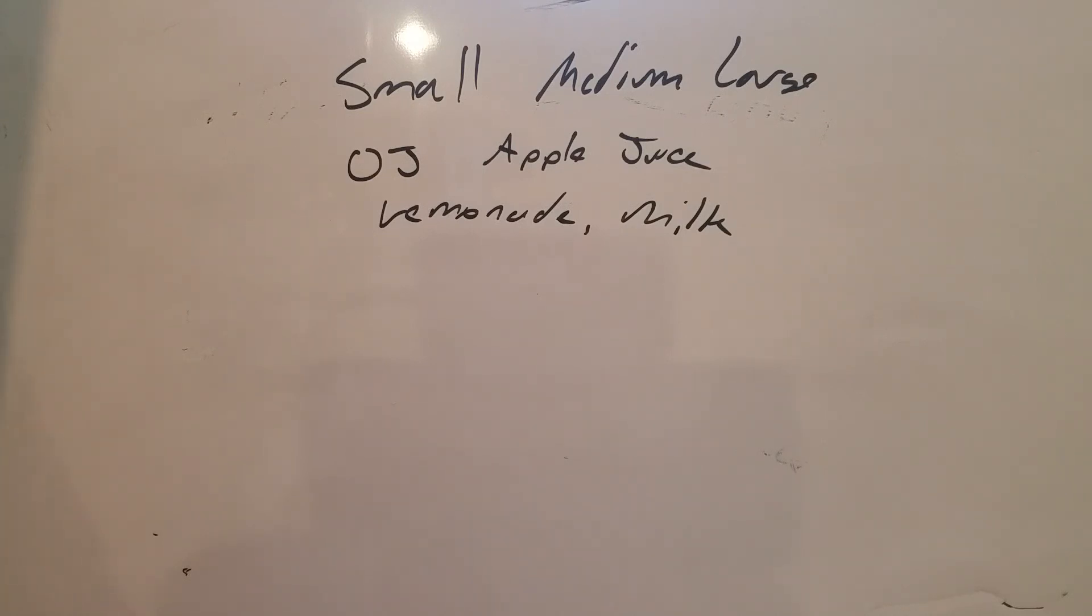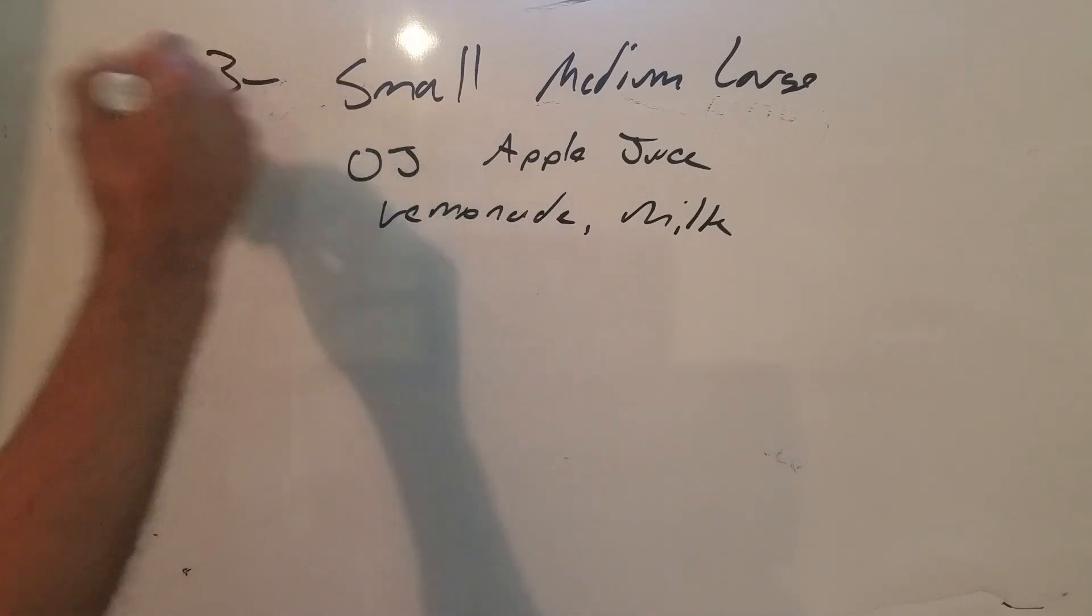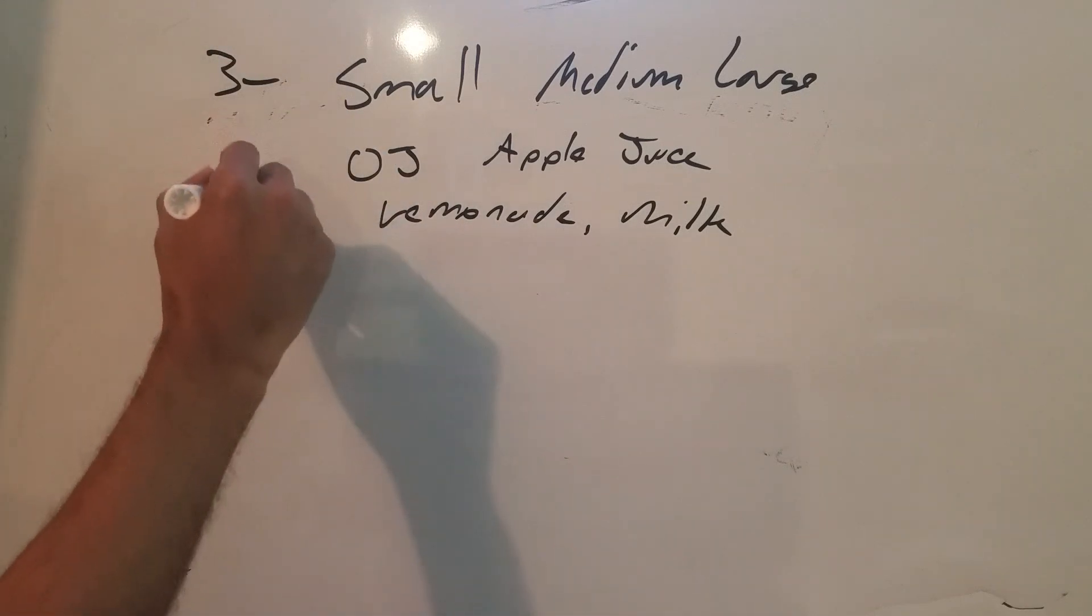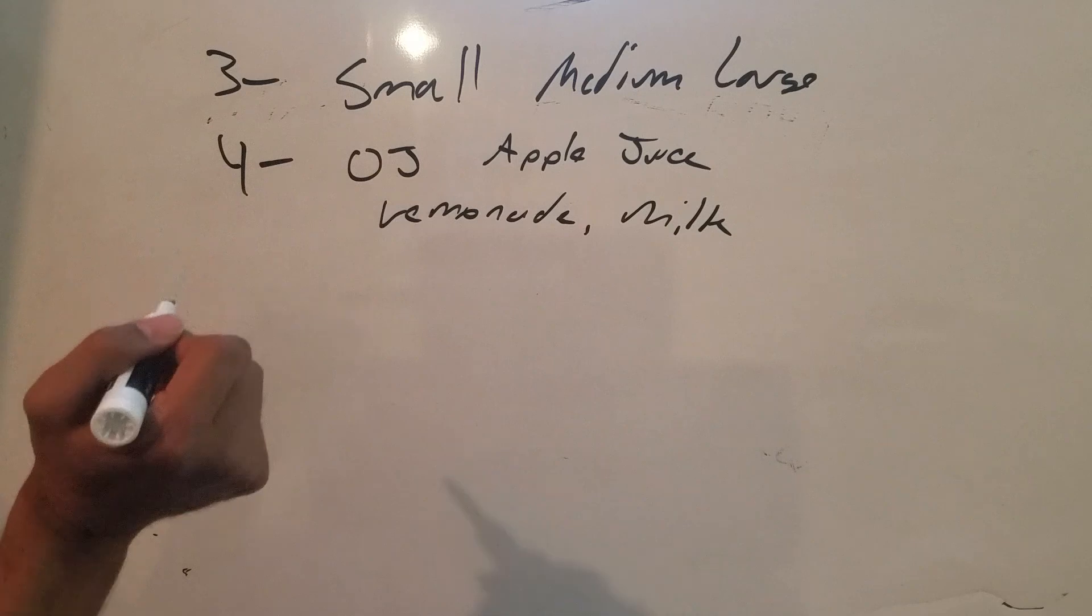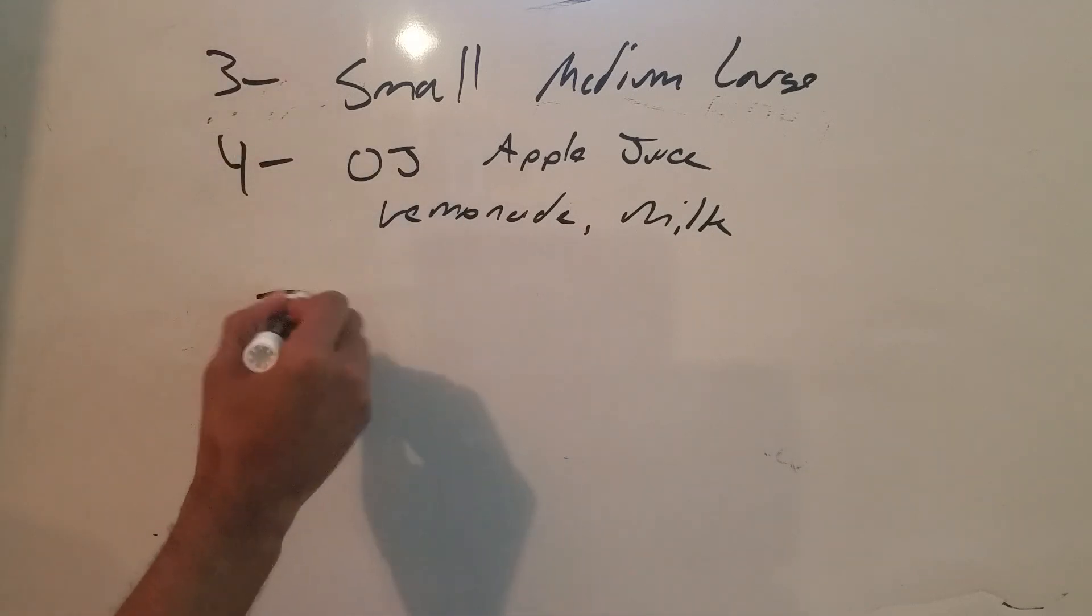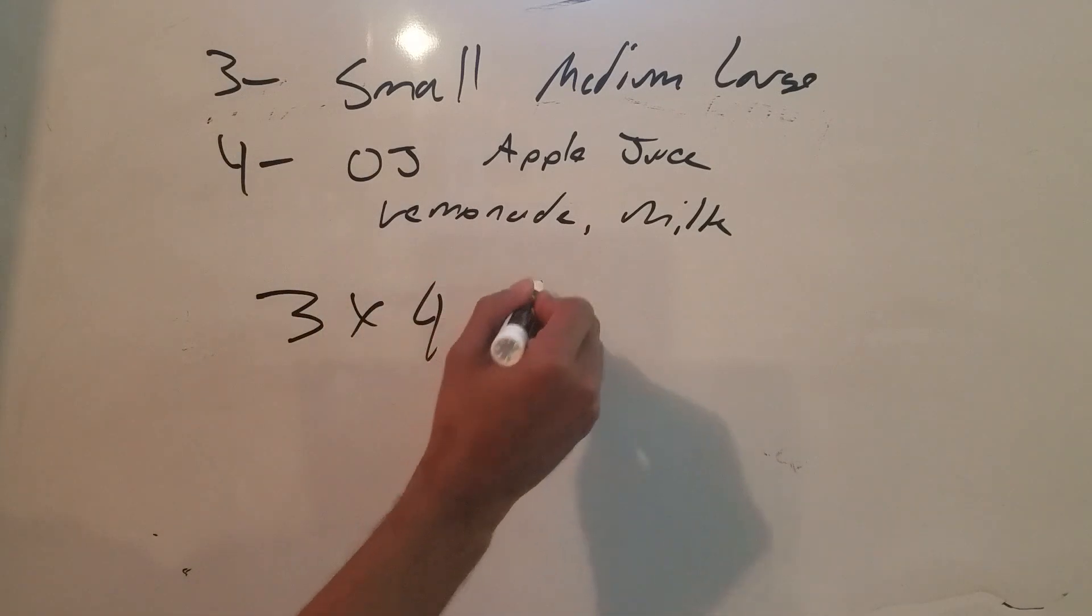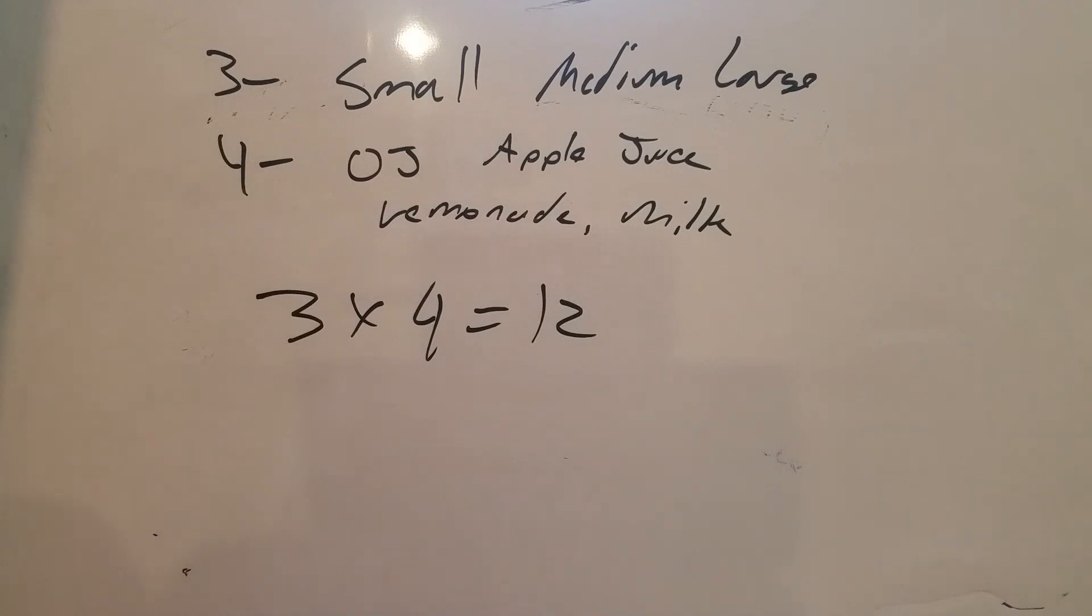So one of the things we can do is we can take how many choices do we have in the first one? Three. How many choices do we have in the second one? That would be four. And just multiply them together. Three times four is 12. When you think about the first example that I just did we could have done that. We had three different activities and two times, so three times two, six possible outcomes.